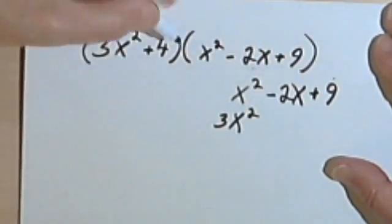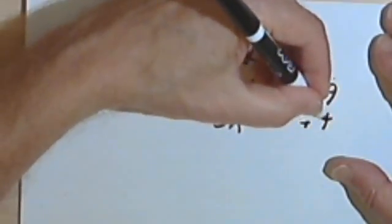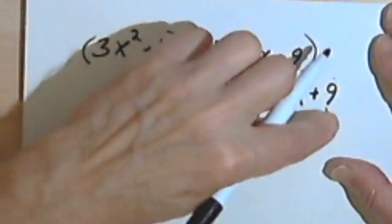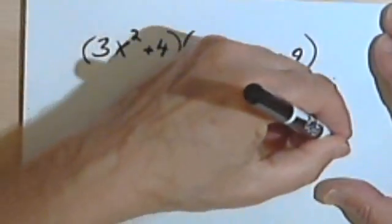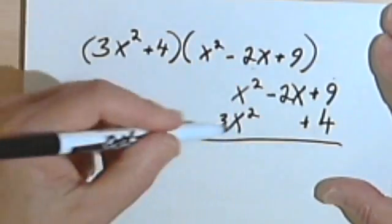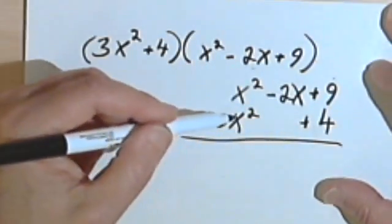So let's write the x squared minus 2x plus 9, and 3x squared I'm going to line that up under my x squared term. I find it helps keep things neat.